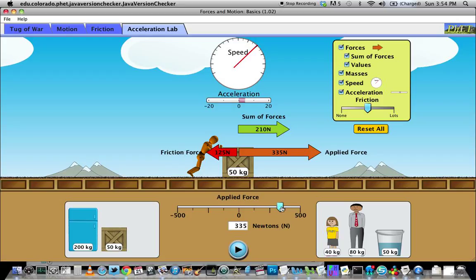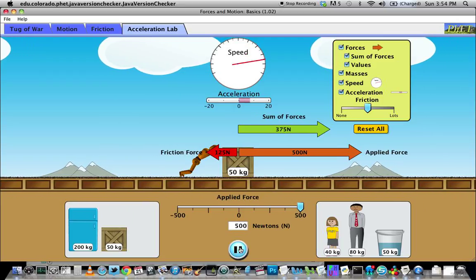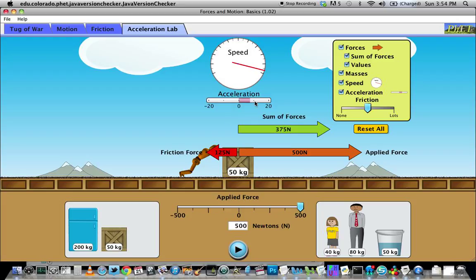We could then take another point by maybe having this guy push a little harder. Make sure that the simulation is playing. And then I could read this as maybe 7 or 7 and a half. Like I said, it's hard to tell.